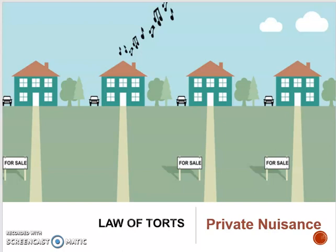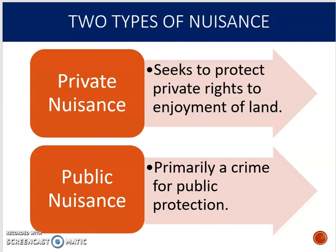Hello everyone and welcome to the first of our video tutorials on nuisance. Today we're going to be looking at private nuisance. A good preliminary definition for the tort of private nuisance can be found in Miller v Jackson, where Denning says: 'The very essence of private nuisance is the unreasonable use by a man of his land to the detriment of his neighbour.'